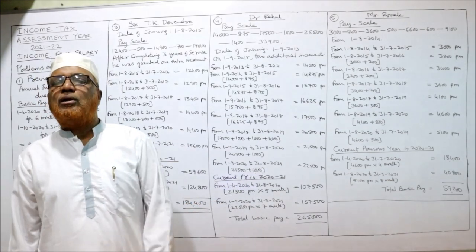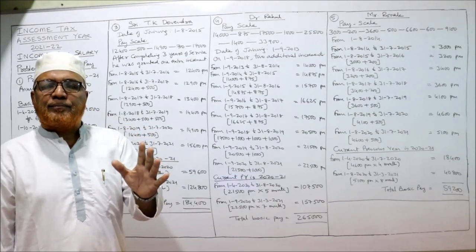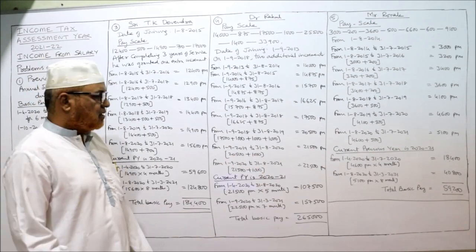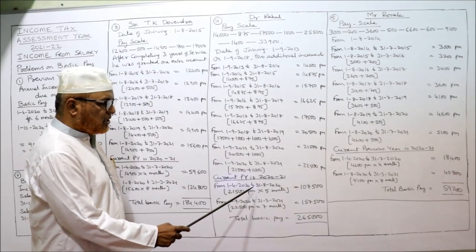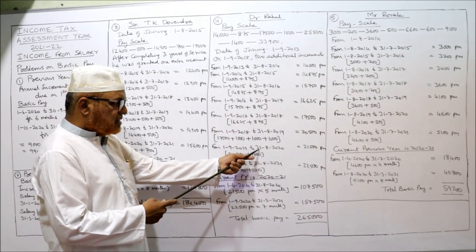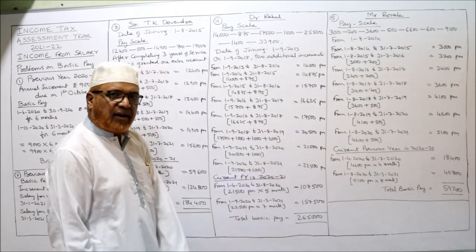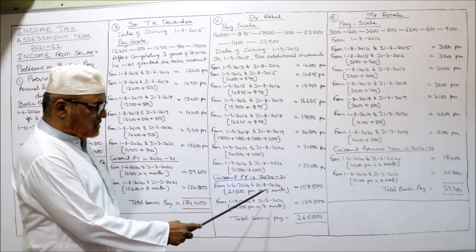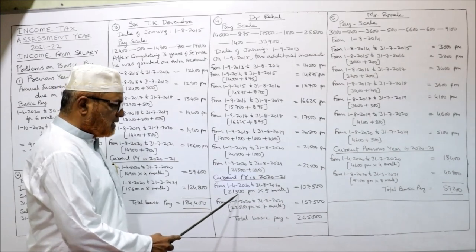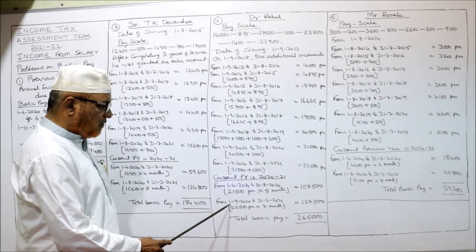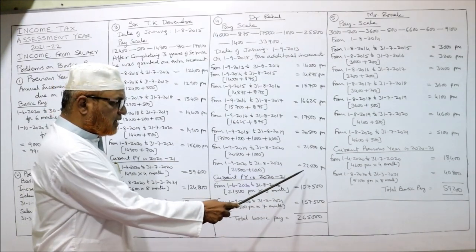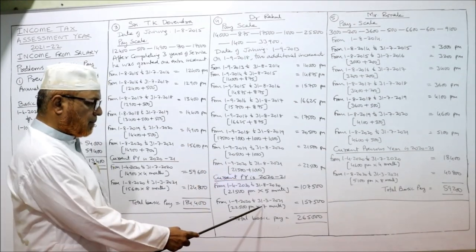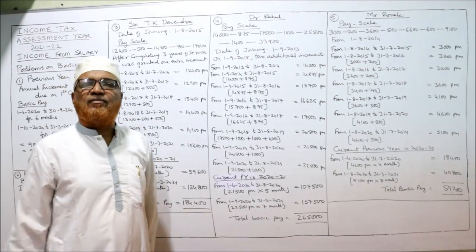We have reached up to 31st August 2021; our year ends on 31st March 2021, so we have all the data needed. For current previous year 2021: from 1st April 2020 to 31st August 2020 — 5 months — salary is 21,500. So 21,500 × 5 = 1,07,500. From 1st September 2020 to 31st March 2021 — 7 months — salary is 22,500. So 22,500 × 7 = 1,57,500. Total basic pay = 2,65,000 for the current previous year.